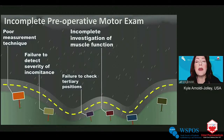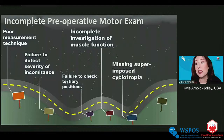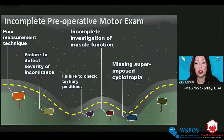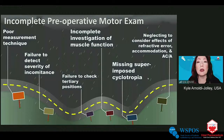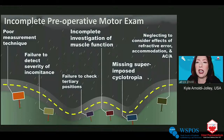Incomplete investigation of muscle function: if I find a limitation on versions I investigate further with ductions and saccadic velocities — just at chairside, no special equipment needed. We might miss a superimposed cyclotropia; we should look every time we have a vertical deviation, with the possible exception of DVD. Finally, neglecting the effects of high refractive error: patients with high plus or high minus lenses can produce misleading results on a cover test due to the prismatic effect of those lenses, leading to over- or underestimation of the deviation.